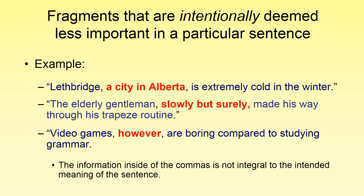Another use of the comma is to denote a fragment within an independent clause — a fragment that is less important and doesn't contain the core meaning of the sentence, so we can remove it without changing the meaning. For example: 'Lethbridge, a city in Alberta, is extremely cold in the winter.' 'A city in Alberta' is an aside — a small fragment stated in case we didn't know, but if we pull it out, 'Lethbridge is extremely cold in the winter' retains the same meaning. Similarly: 'The elderly gentleman, slowly but surely, made his way through his trapeze routine.' 'Slowly but surely' is just there for style. And: 'Video games, however, are boring compared to studying grammar' — 'however' is a single adverb used as an aside.